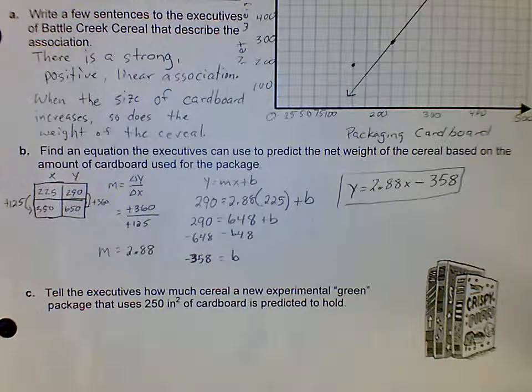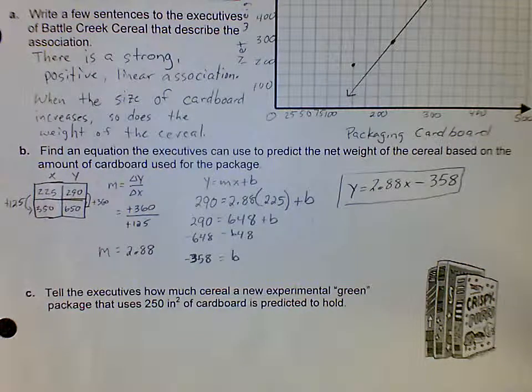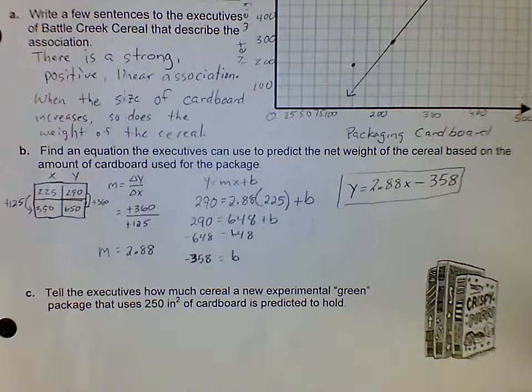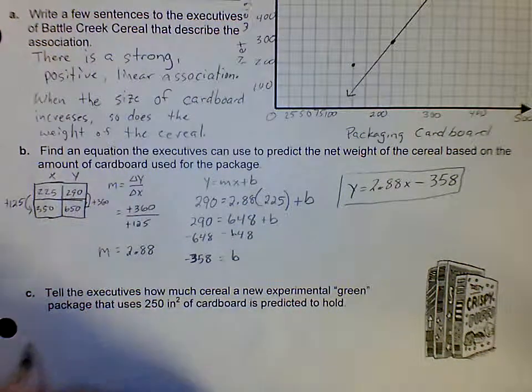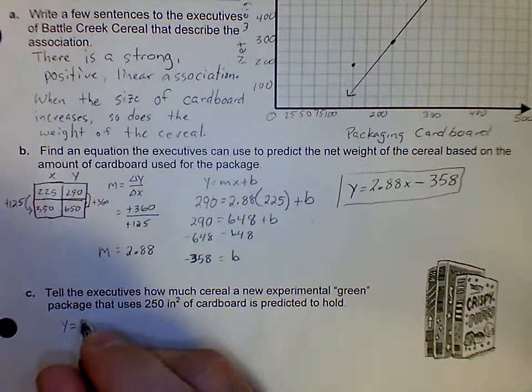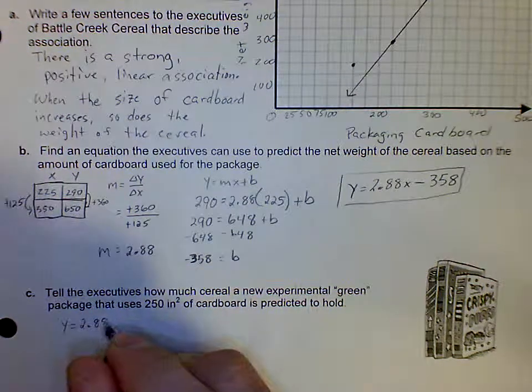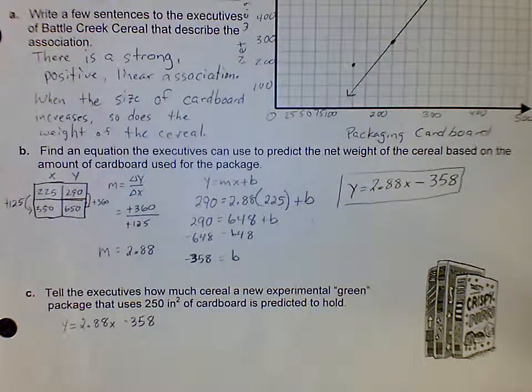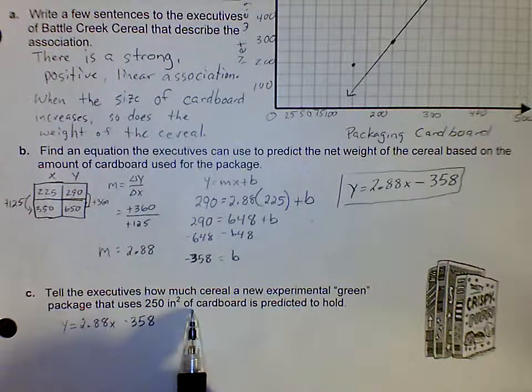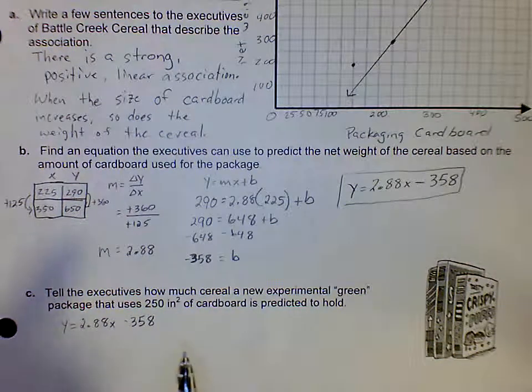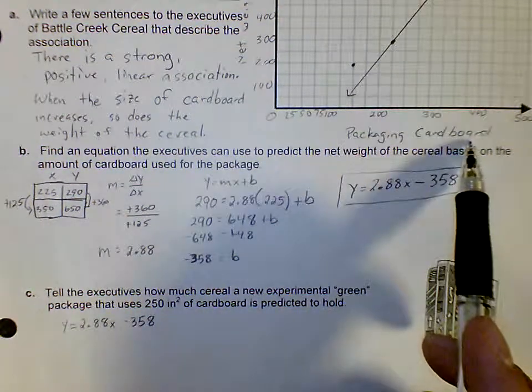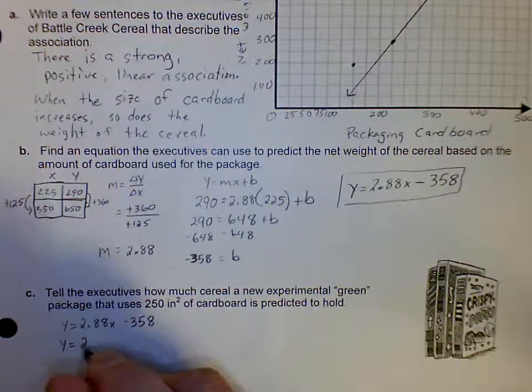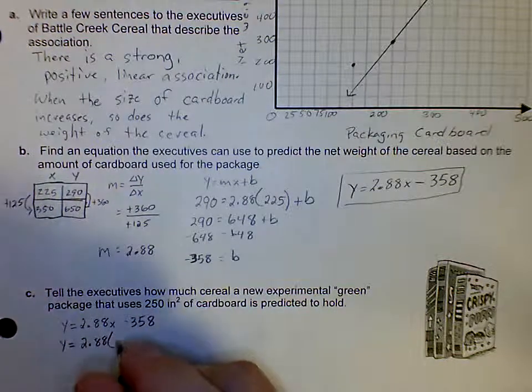Question c says tell the executive how much cereal a new experimental green package that uses 250 square inches of cardboard is predicted to hold. So I've got my equation: y equals 2.88x minus 358. And it's 250 square inches of cardboard. I can see that packaging cardboard is my x, so I'm going to plug that value in for x. Y equals 2.88 times 250.